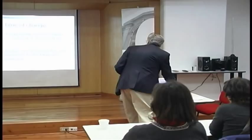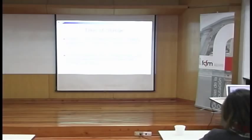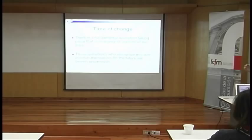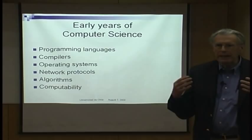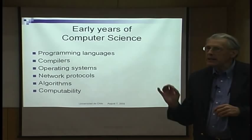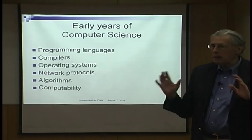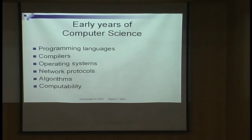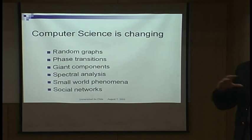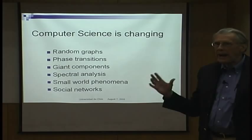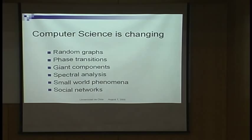There are fundamental changes taking place that are going to affect everybody's lives. Those individuals who recognize this and position themselves will be on the right side. In the early years, computer science was concerned with how to use computers — programming languages, operating systems, compilers. But computer science departments are now changing their curriculum, talking about things like random graphs, phase transitions, small world phenomena, and social networks. It's the impact that computers are having in other disciplines that is important.